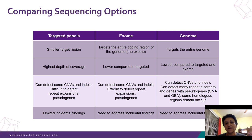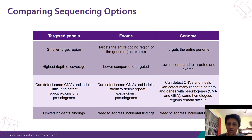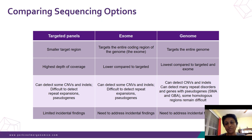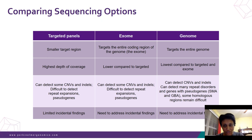Panels have limited incidental findings, though that doesn't mean there are none — for example, the GBA gene can cause Gaucher disease but is also associated with Parkinson's disease. Exome provides lower depth of coverage because you're targeting the entire exome — about 1–2% of the genome — and you will get incidental findings. The genome targets the entire 3 Gb at 30–40x depth coverage.